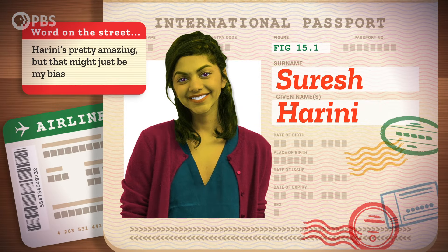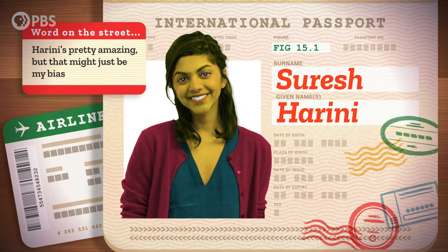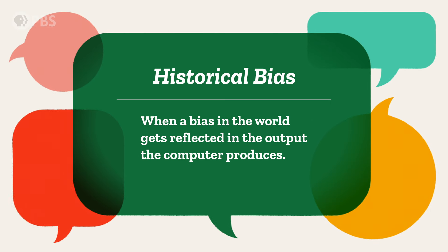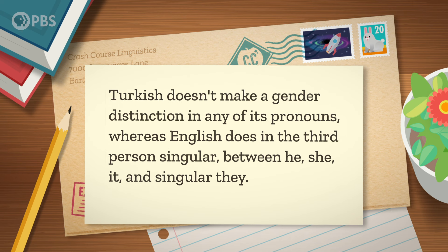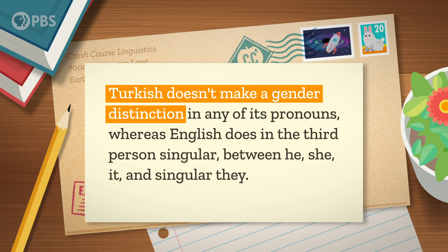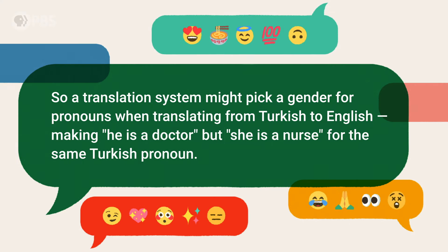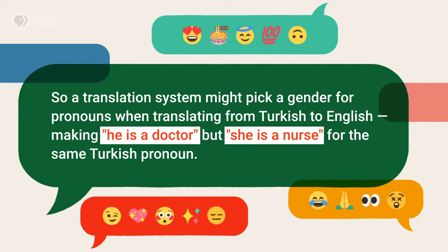But none of this data just magically appears — it gets created or gathered by humans, and humans have all sorts of biases. Computer science researcher Harini Suresh created a framework to evaluate bias in machine learning. We can use this framework to see how bias affects the language tools we've discussed. First, historical bias is when a bias in the world gets reflected in the output the computer produces. For example, Turkish doesn't make a gender distinction in any of its pronouns, whereas English does in the third-person singular between he, she, it, and singular they. So a translation system might pick a gender for pronouns when translating from Turkish to English, making 'he is a doctor' but 'she is a nurse' from the same Turkish pronoun. This might reflect an overall tendency in the world, but our computer is still producing a gender bias.